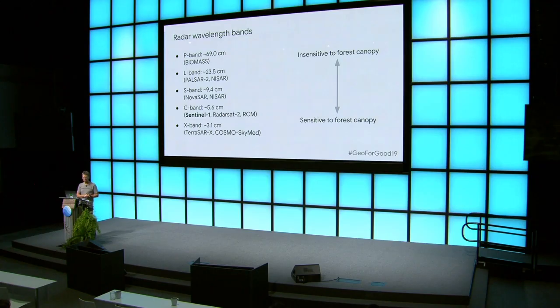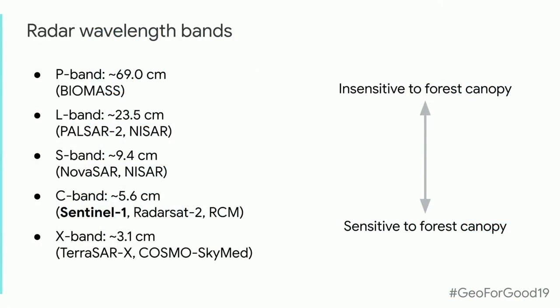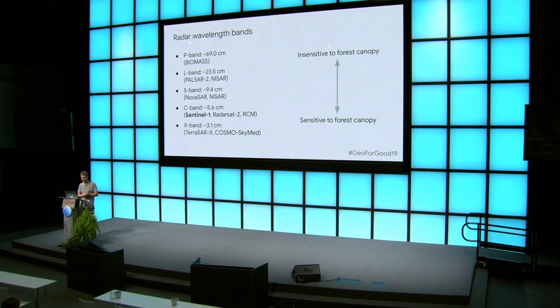There are many different classes of radar wavelength bands: P, L, S, C, and X. The one we're going to be working with today is C band. When you get down to C and X bands, they're pretty sensitive to forest canopy and are not always penetrating when you have dense foliage. Other sensors like PALSAR in the L band or the upcoming NISAR have a much longer wavelength, so they give you more information about what's on the ground. It's important to know that all radar is not created equal.